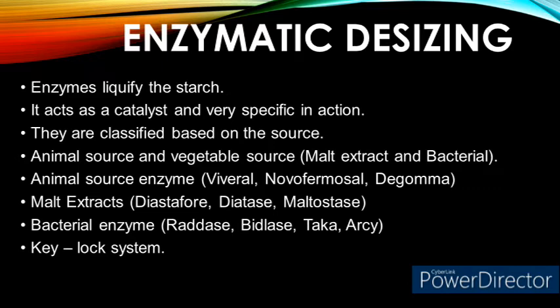Vegetable enzymes are further classified as malt extract desizing enzymes and bacterial desizing enzymes. Examples of malt extract desizing enzymes include Diastrophore, Diastase, and Maltostase. Under bacterial enzymes, the examples are Radish, Bidlesh, Taka, and Arsi. Each enzyme catalyzes only one reaction — that is the outstanding feature of enzymes. Enzymes will become inactive if certain conditions of concentration, pH, and temperature are not maintained. Hence, it is called the key-lock system.